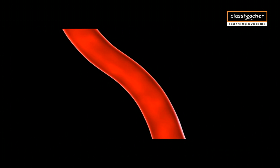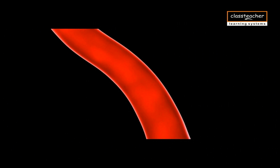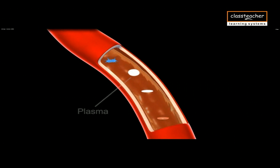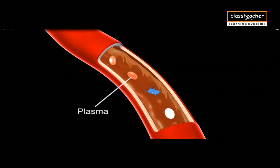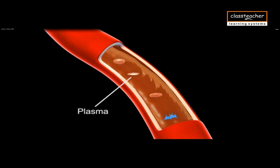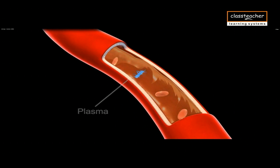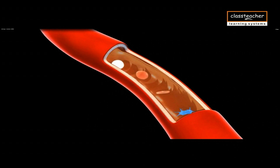Blood is actually a connective tissue. The blood consists of a fluid matrix called plasma. It is straw colored and it contains about 90% of water.